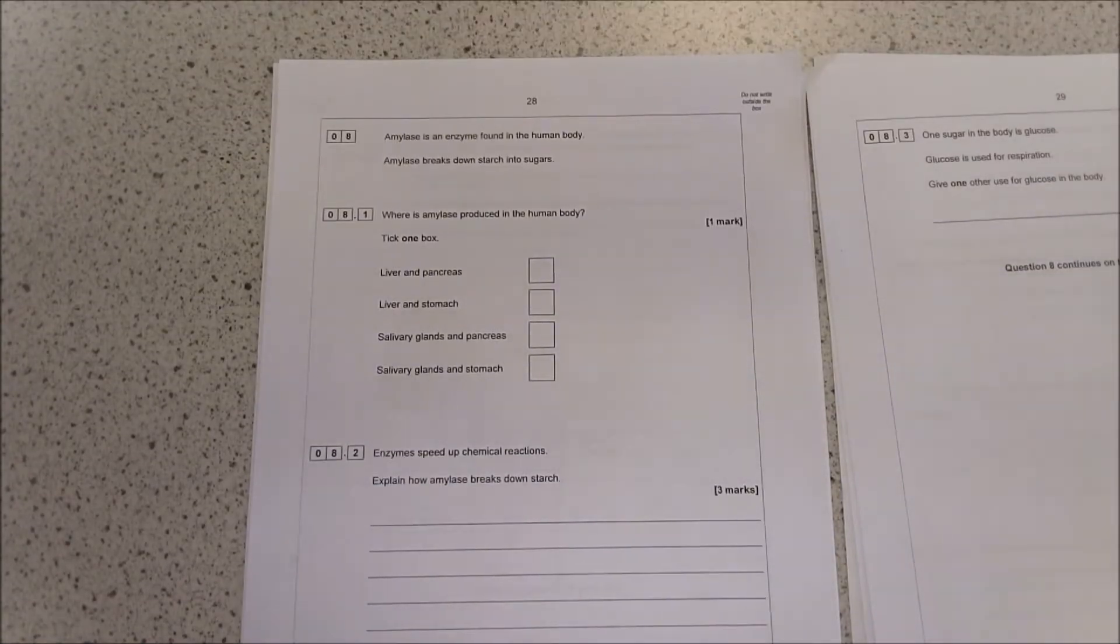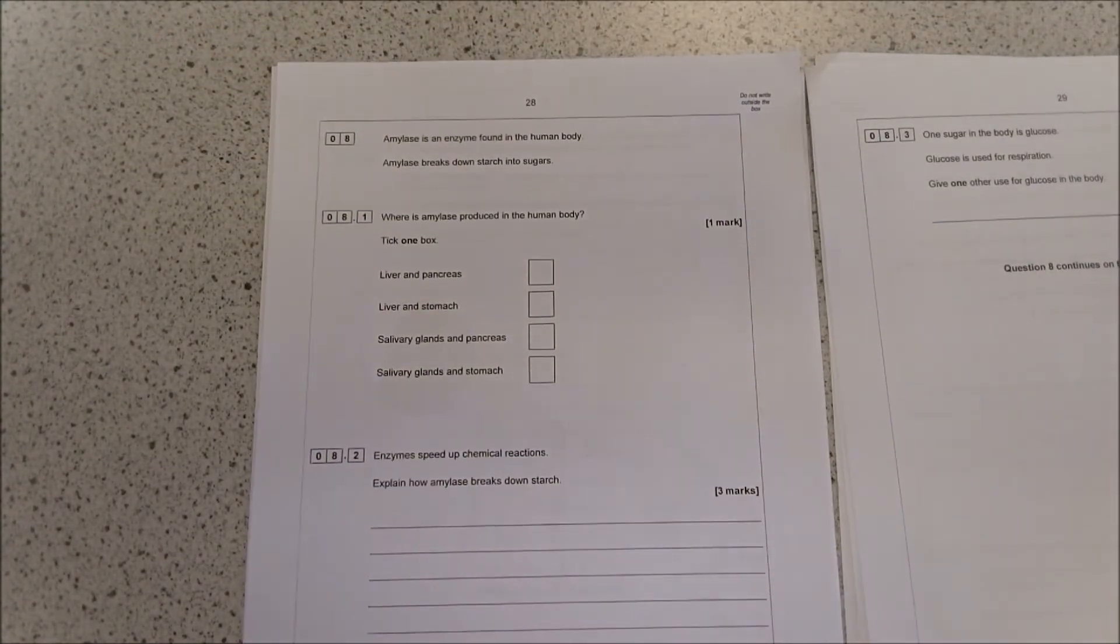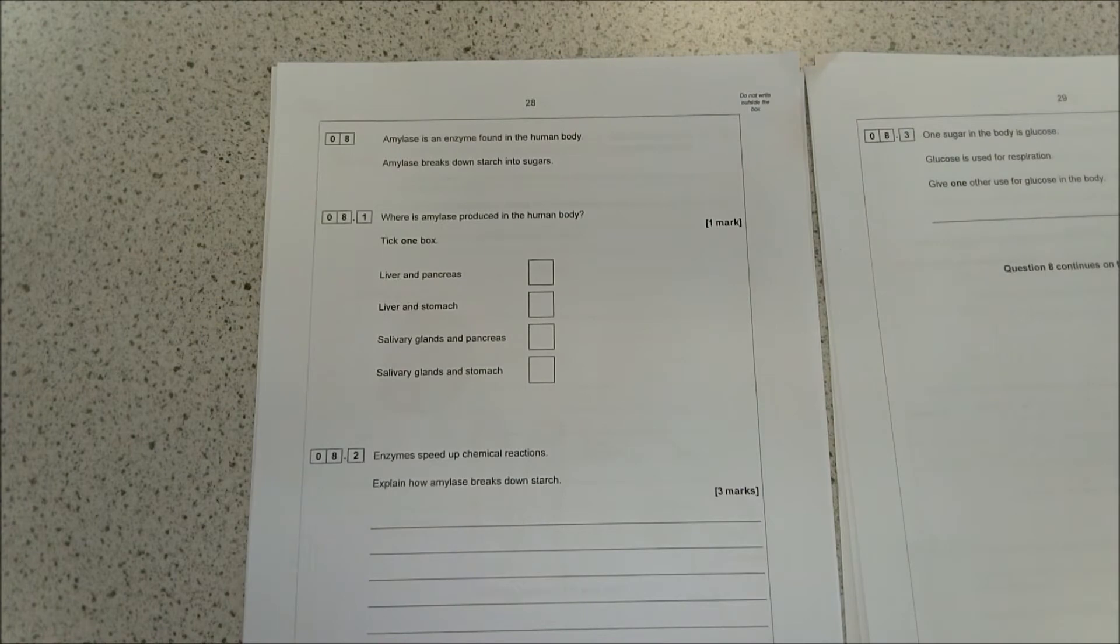In this question we're going to look at a range of things to do with enzymes, including a question that is loosely based around the enzyme required practical. It states that amylase is an enzyme found in the body. Amylase breaks down starches into sugars. Remember, in general you need to look up where your different enzymes are made.